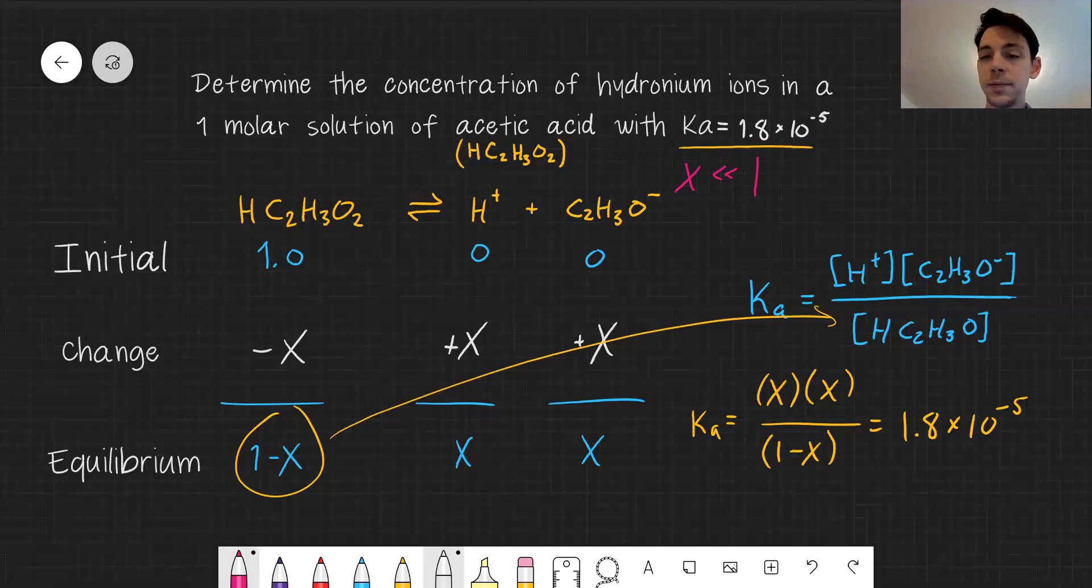How do we actually use this to make our expression a little bit simpler? If I know that X is much less than 1, then we can assume that 1 minus X is approximately X. 1 minus X is approximately 1.